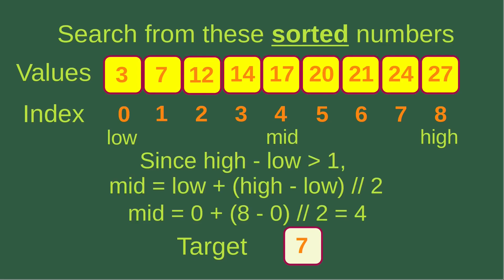Then I have to check the condition first. The high index minus the low index is eight minus zero, which is eight — larger than one. So I can set up the mid-index using the formula from the first slide. Plugging in the high and low indices, I get four, so the mid-index becomes four, which corresponds to number 17.